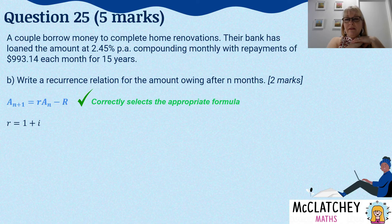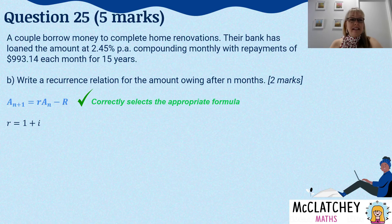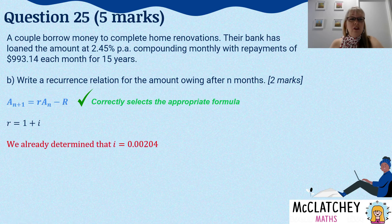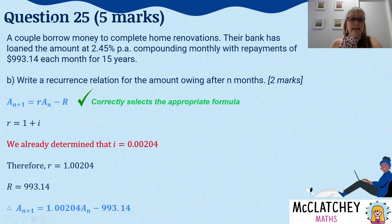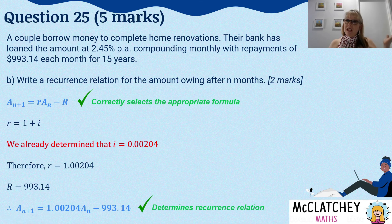Understanding the different variables: capital R in this formula means the repayment amount — $993.14. Don't be fooled into substituting the 2.45% annual rate directly; we already converted that to the monthly rate of 0.00204 in Part A. Add 1 to get 1.00204, substitute that in for the lower-case r, and place the repayment value in for capital R. We've now determined our recurrence relation and finished the question.